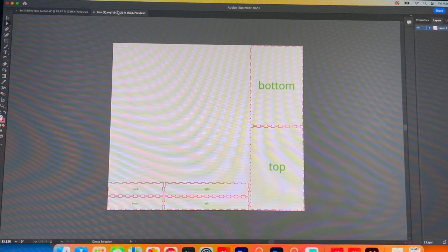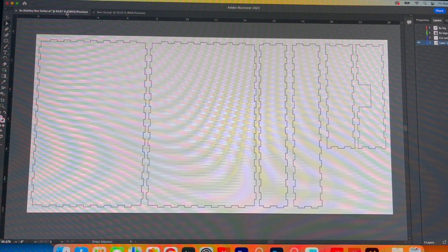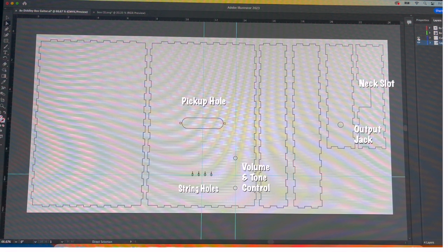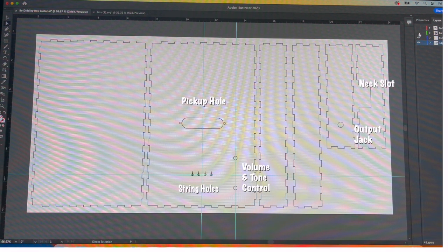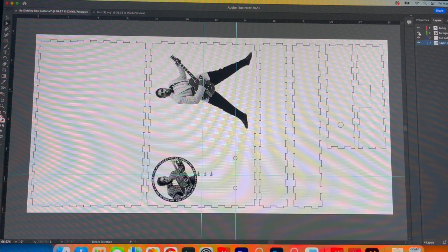I downloaded the SVG file and opened it in Illustrator. I rearranged the parts for a tighter fit, then made the cutouts for the pickup, the controls, the string holes, the neck slot, and the output jack. Then I placed the Bo Diddley graphics and saved the file as a PDF.